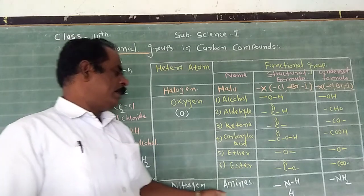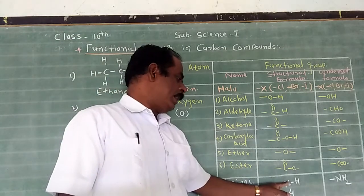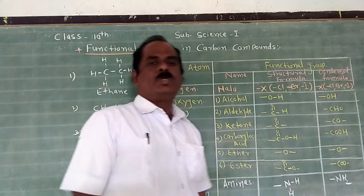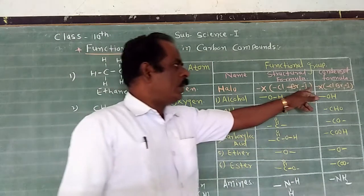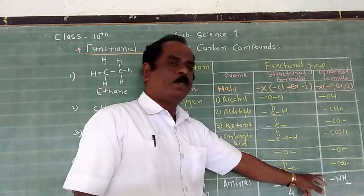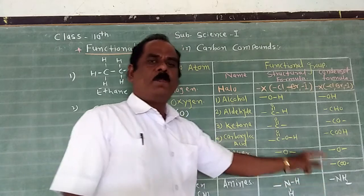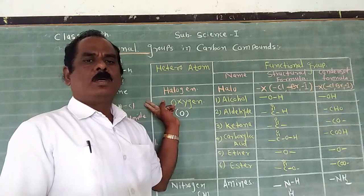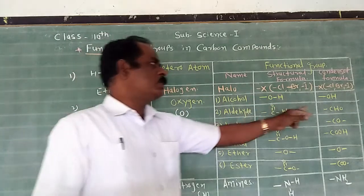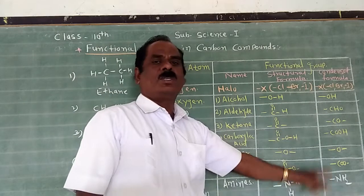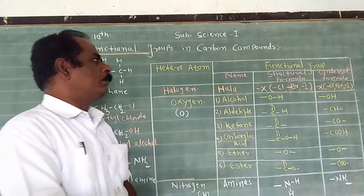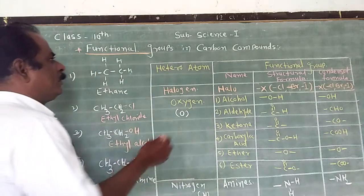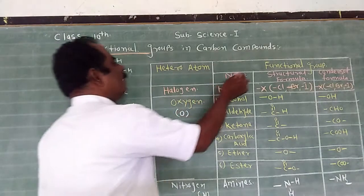For the nitrogen heteroatom, the example is the amine group. Its formula is bond NH — bond NH, and the condensed formula is bond NH2. When this heteroatom or hetero group replaces the hydrogen atom of a hydrocarbon compound, the group is called a functional group. Also remember, double bonds and triple bonds also act as functional groups. In the case of alkenes, you know the formula of ethene.